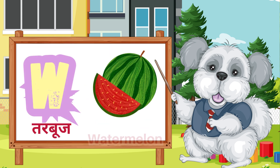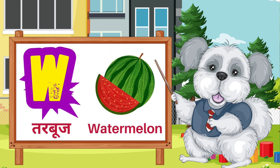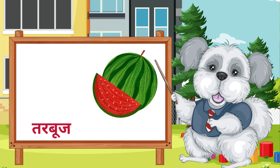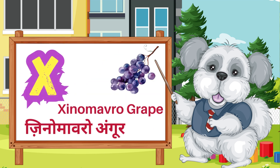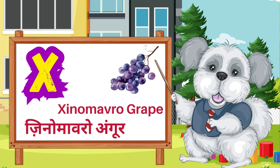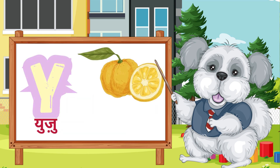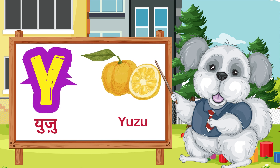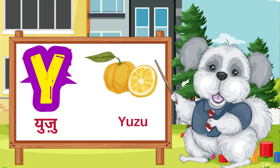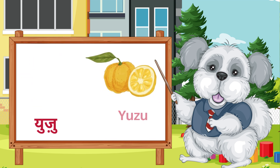W is for watermelon. X is for xenomavro grapes. Y is for yuzu.